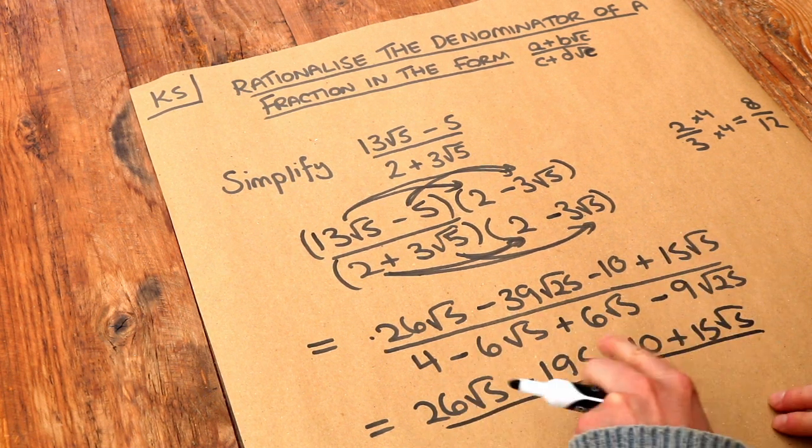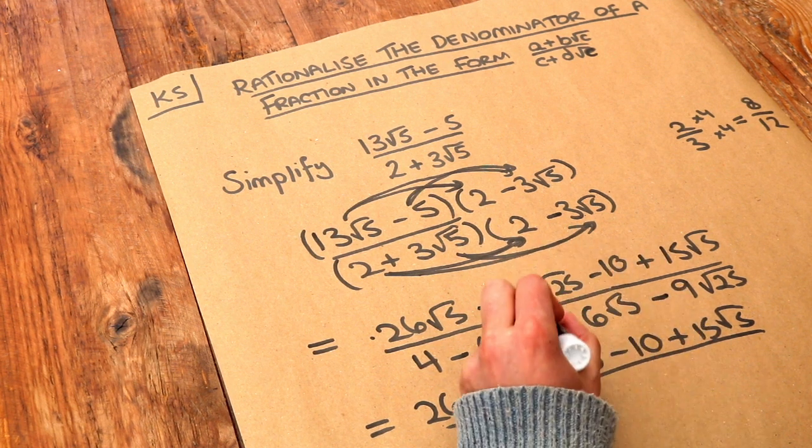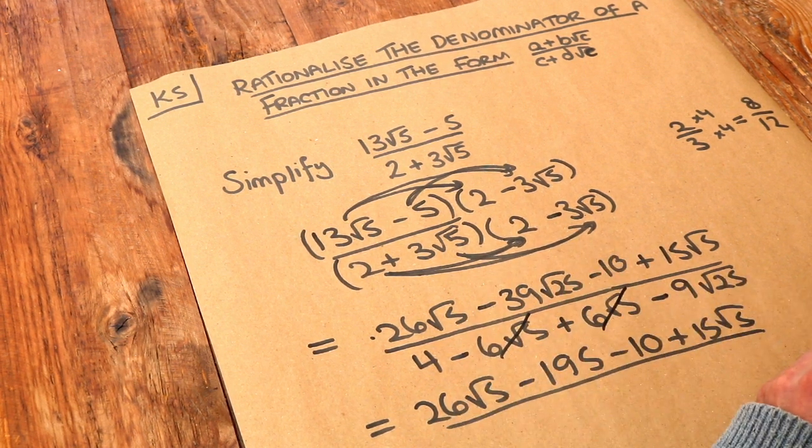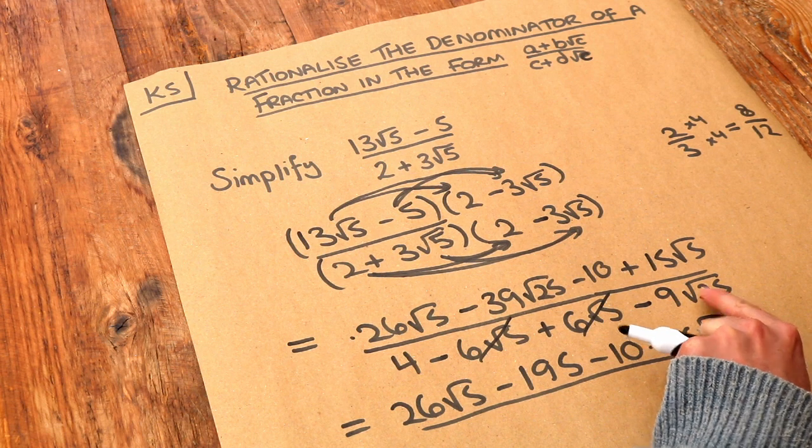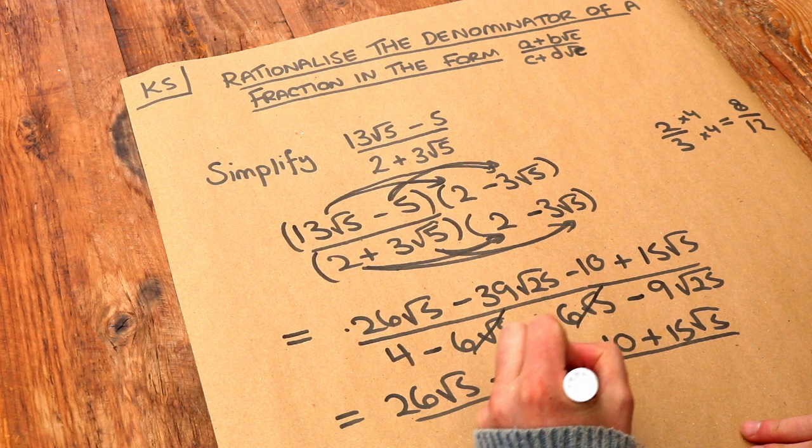And what's the bottom? Well, notice the minus 6 root 5 and the plus 6 root 5 just cancel. And root 25 is 5. 5 times 9 is 45. So we've got 4 minus 45 at the bottom.